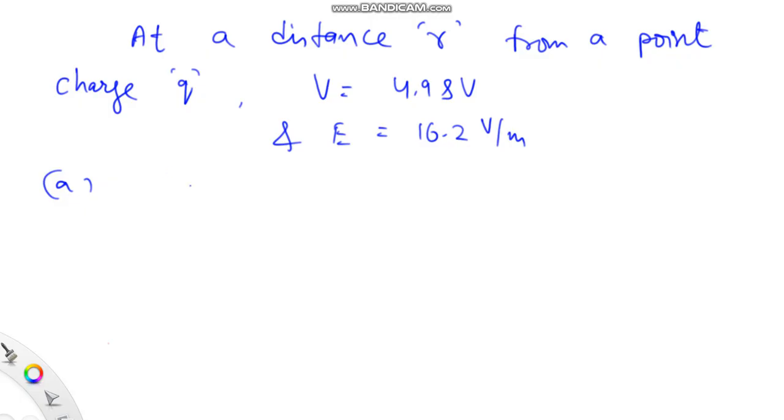Using the relation between electric field and potential, electric field is given as potential gradient, so r will be given as V by E.